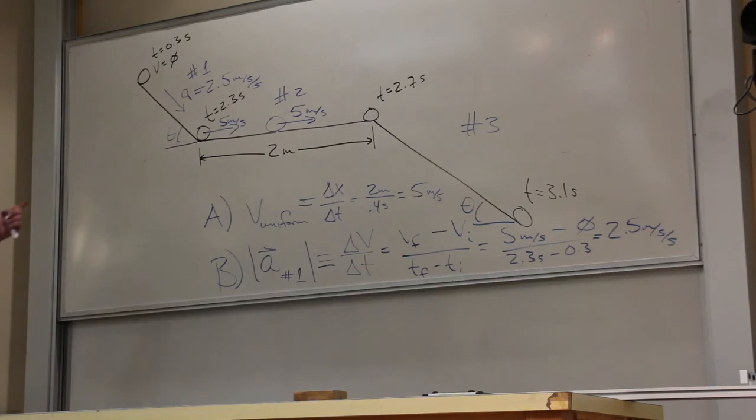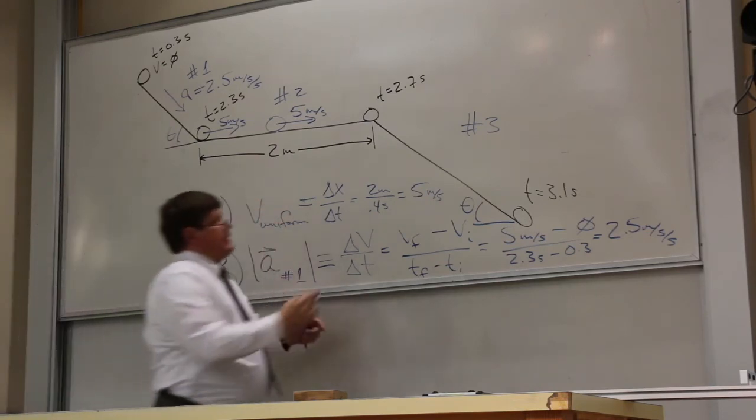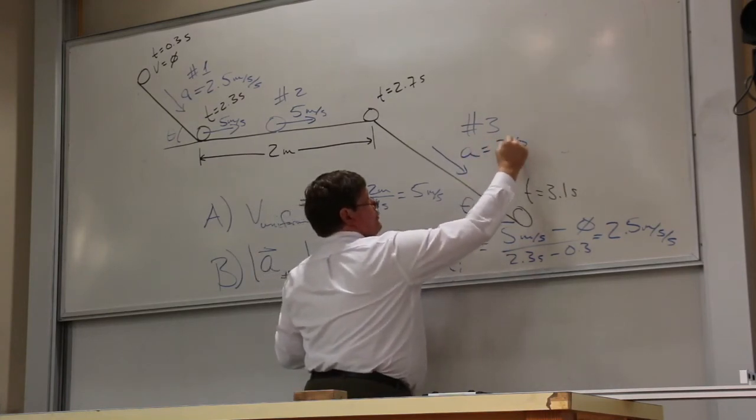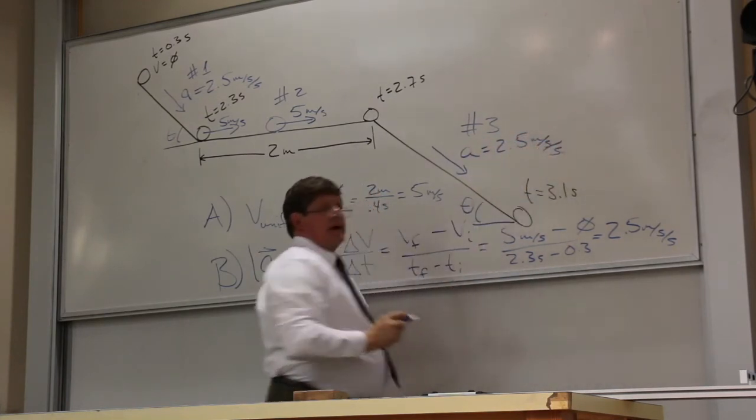The ball doesn't know whether it's on this ramp or that ramp, so the acceleration over here would also be 2.5 meters per second every second.